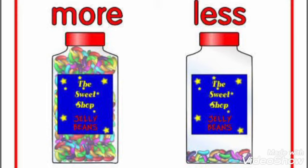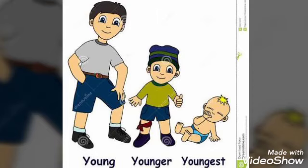And there are two bottles — more things are there in the first bottle and less things are there in the second bottle. Then young, younger, youngest.